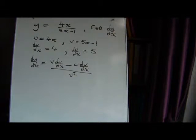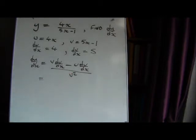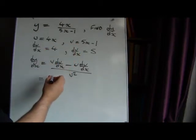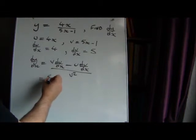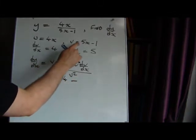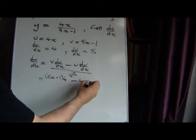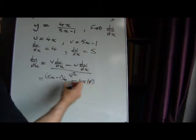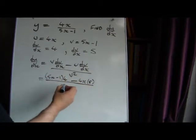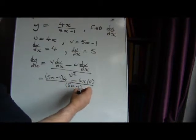So that's what we're going to do. We've got to assemble all of that. If we begin to substitute them in, that means we're doing v times du. So that will be 5x minus 1 multiplied by 4, and we're subtracting u times dv. So that's going to be 4x multiplied by 5, and it's all divided by v squared, which is 5x minus 1 squared.